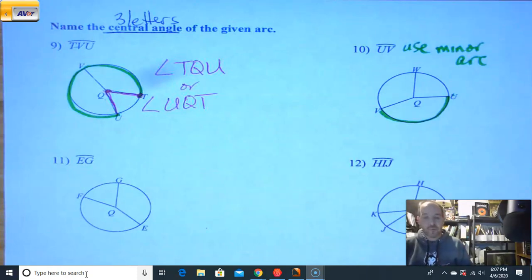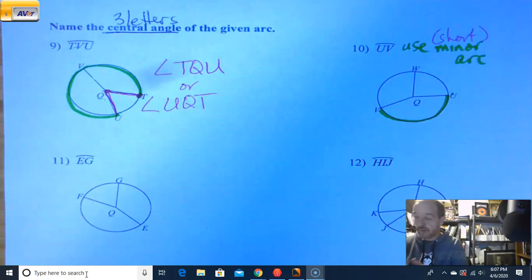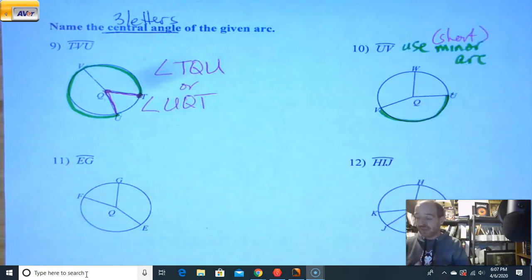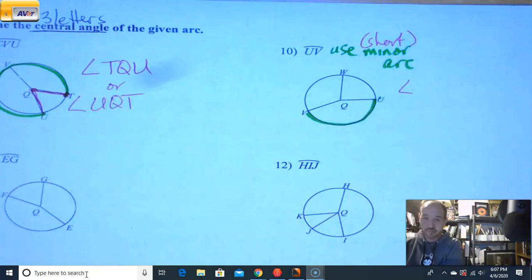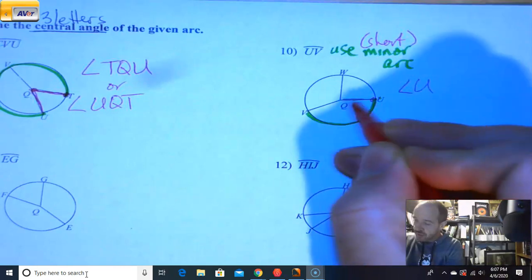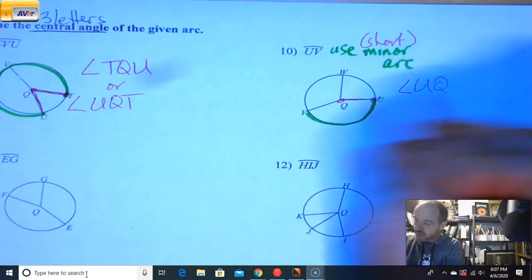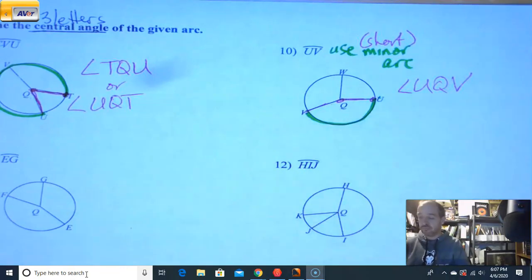But here, if we're not sure, always go with the shorter minor arc is always going to be the shorter distance of them. So here, again, same thing. To get my angle, pick a side to start. U, go to the middle. Q, go to the edge. V, or you could go V, Q, U. Same thing.